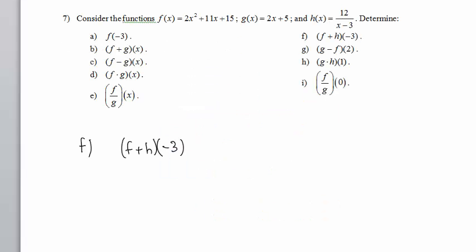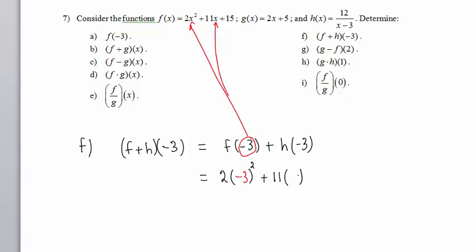In part F, we have F plus H of negative 3. This means F of negative 3 plus H of negative 3. To compute F of negative 3, we're going to take negative 3 and put it into the F equation, wherever we see an X. So we have 2 times the quantity negative 3 squared, plus 11 times negative 3, plus 15. That will give us F of negative 3.